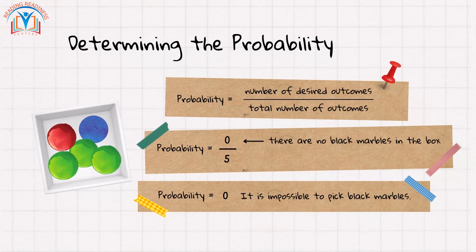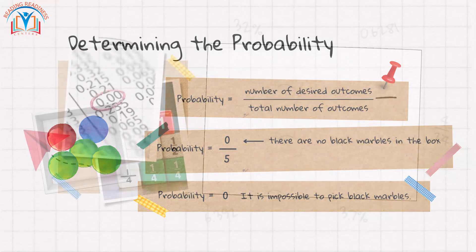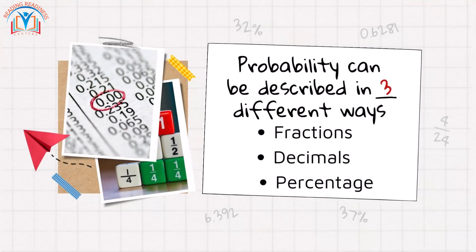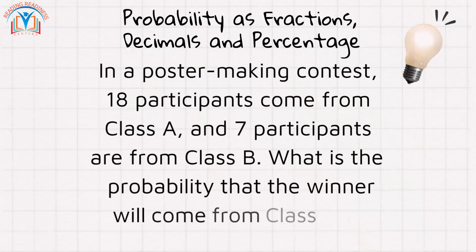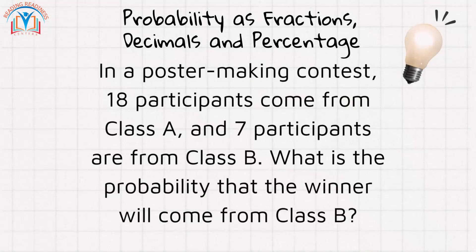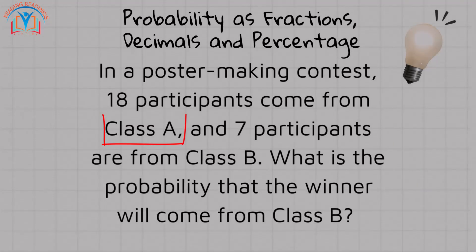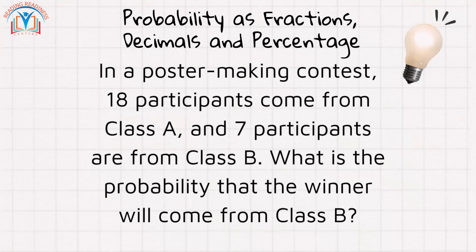Now let's see how we can express probabilities in three different ways: fractions, decimals, and percentages. Here's an example. In a poster making contest, 18 participants come from class A and seven participants are from class B. What is the probability that the winner will come from class B?